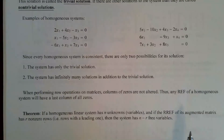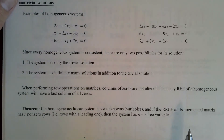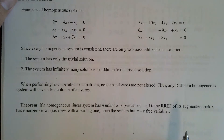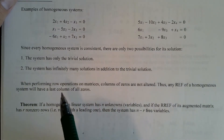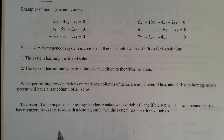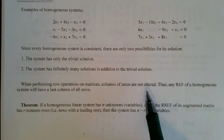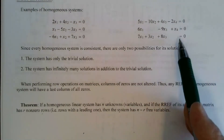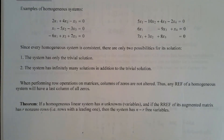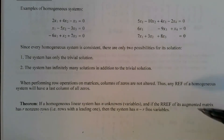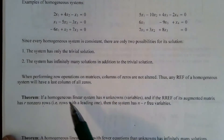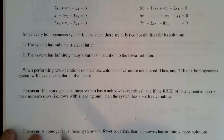That is the question when we talk about homogeneous systems. When you're working with the Gaussian elimination or Gauss-Jordan elimination methods discussed in the last video, notice that no matter what row operation you do, that last column of all zeros in the augmented matrix will never change. No row operation will change those zeros. So any row echelon form of a homogeneous system will have its last column as all zeros — that's really important.